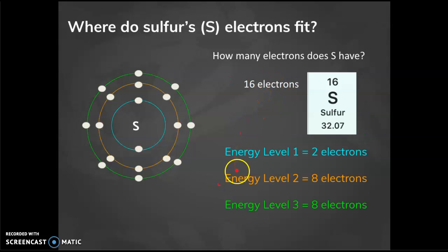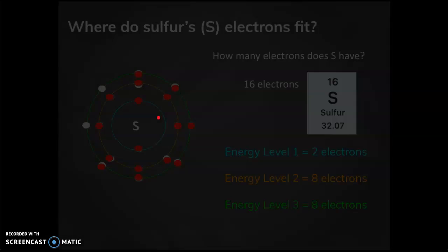What about sulfur? We look at the periodic table. We see sulfur has an atomic number of 16, which means there's 16 electrons. So again, I'm just filling in these little parking spots here with my electrons. So that should give me 10, 11, 12, 13, 14, 15, 16.